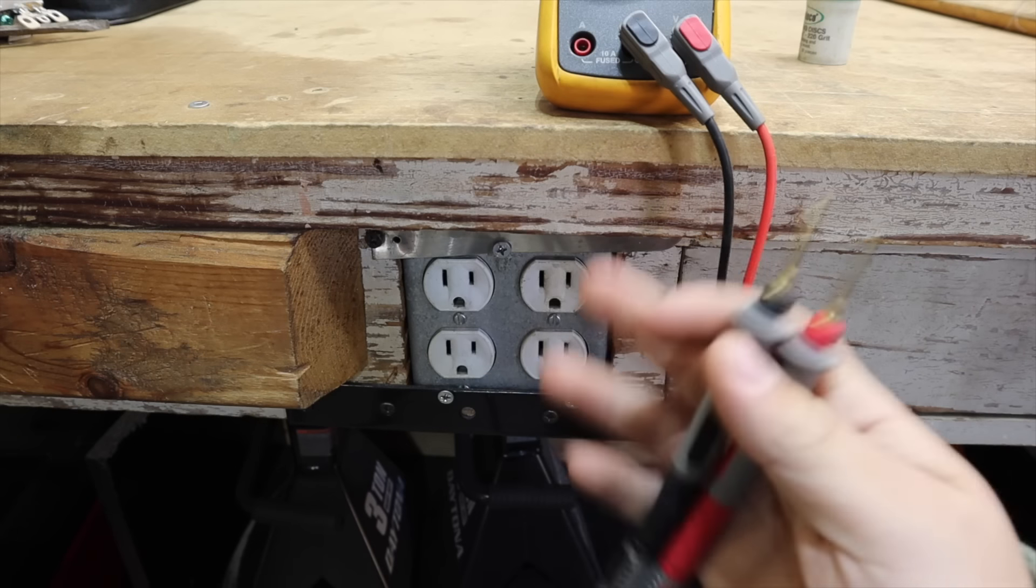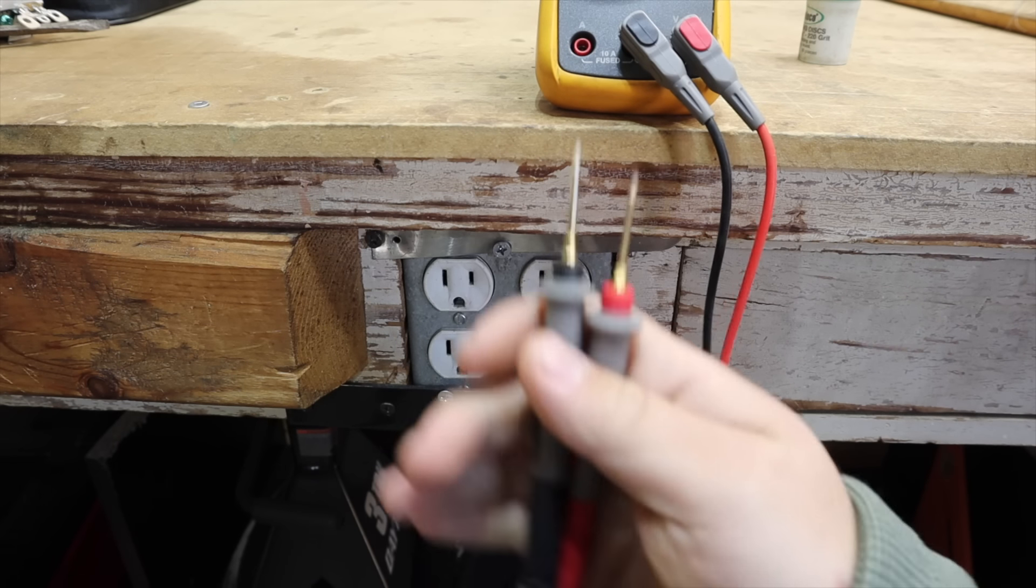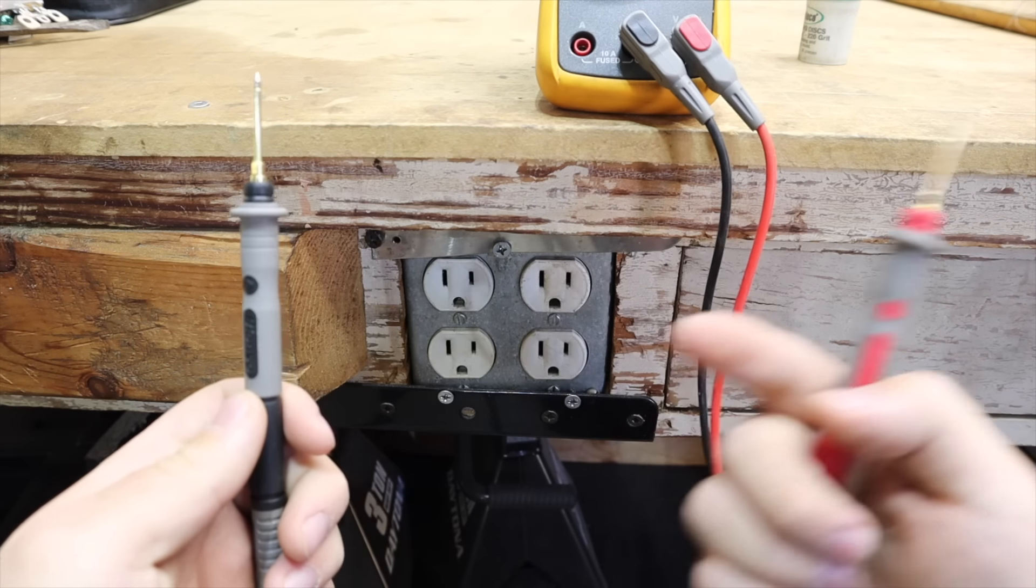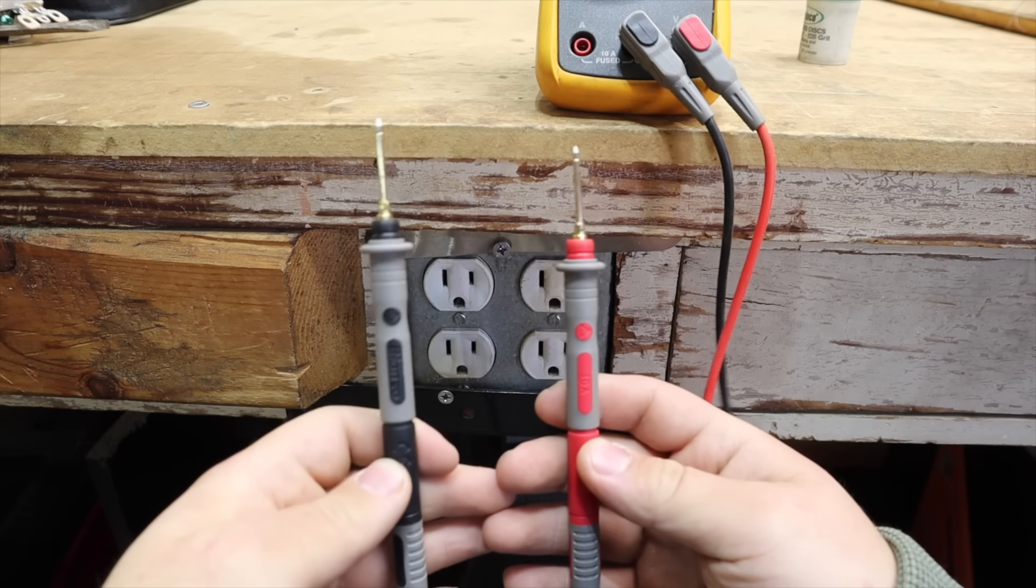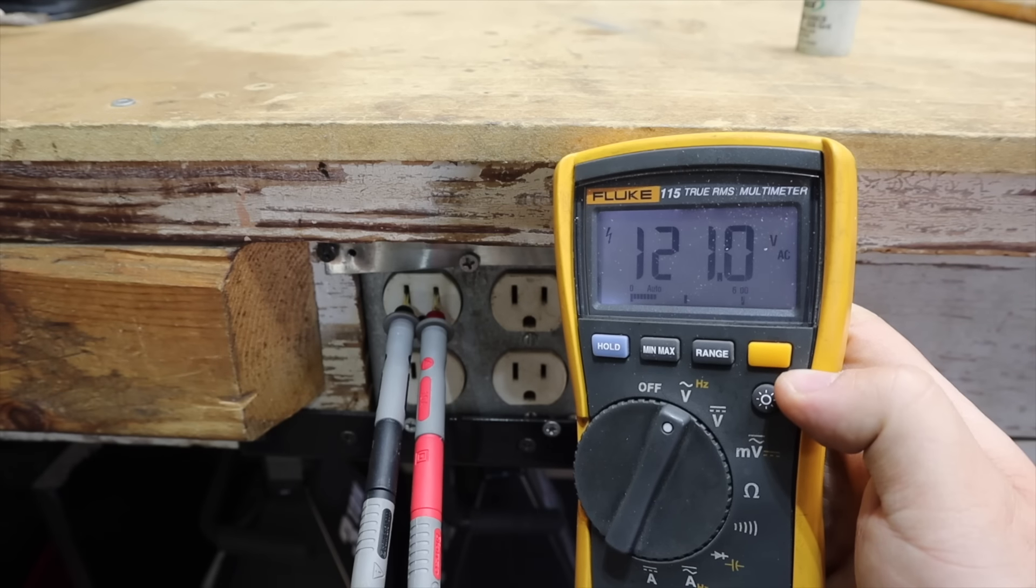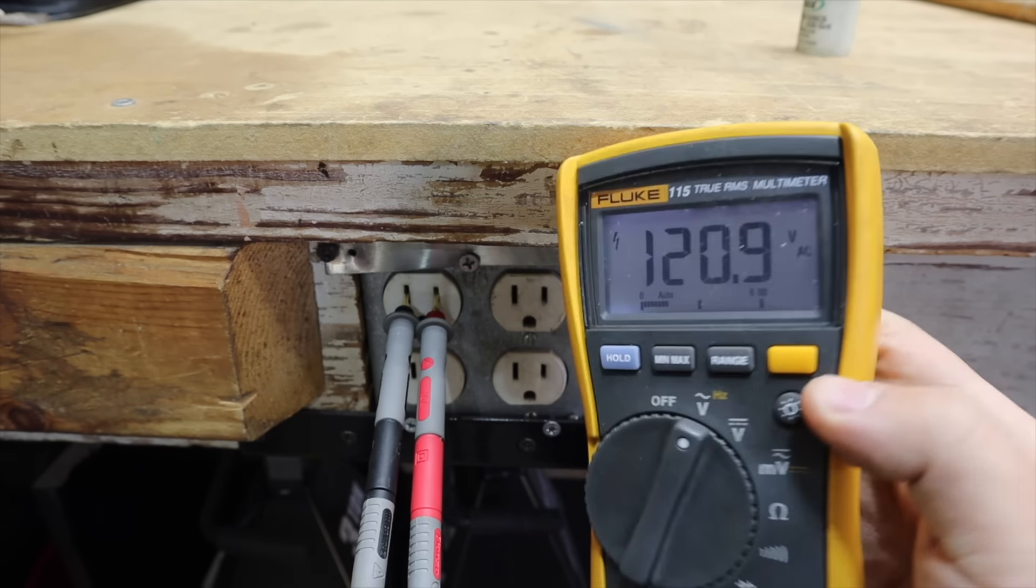When testing deadly high voltage like this many recommend just using one hand as opposed to two. By using two hands you're at risk of completing a circuit through your chest, leaving you at greater risk of death from current passing through your body. Depending where you are in the world you'll read between 100 and 240 volts.